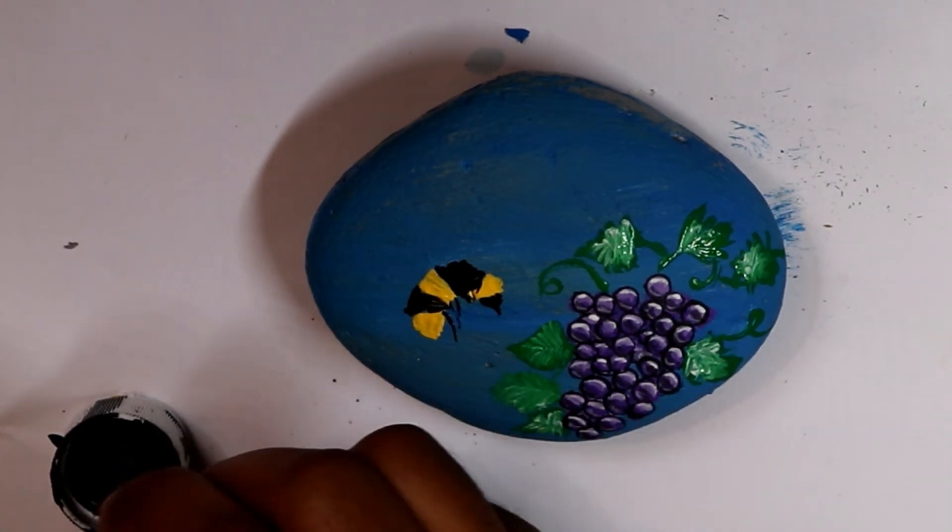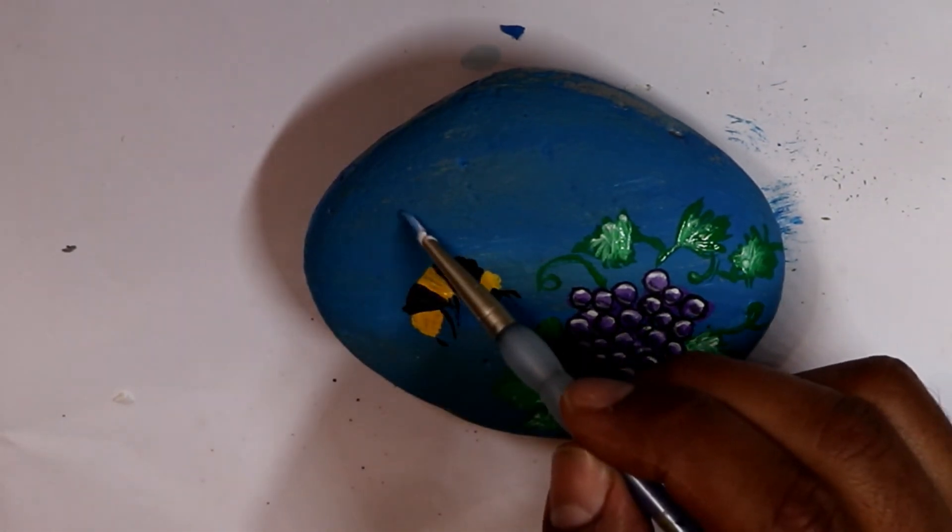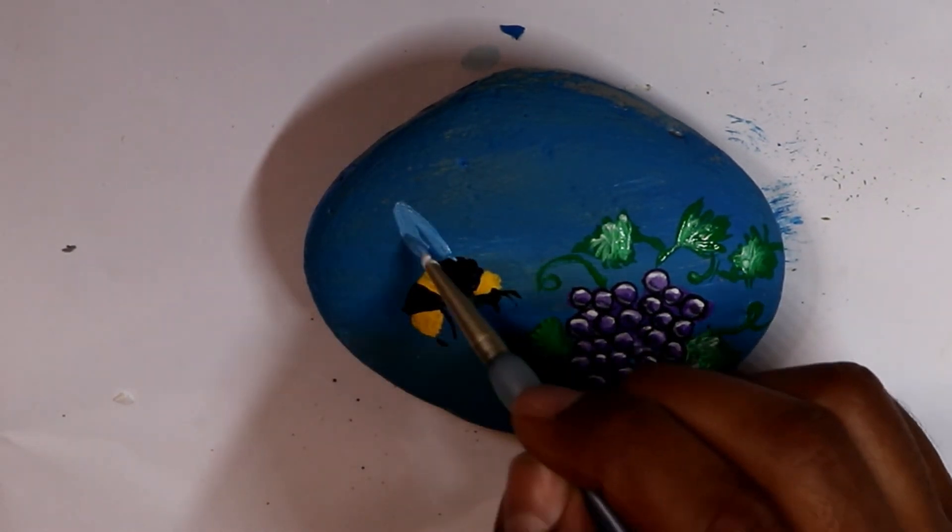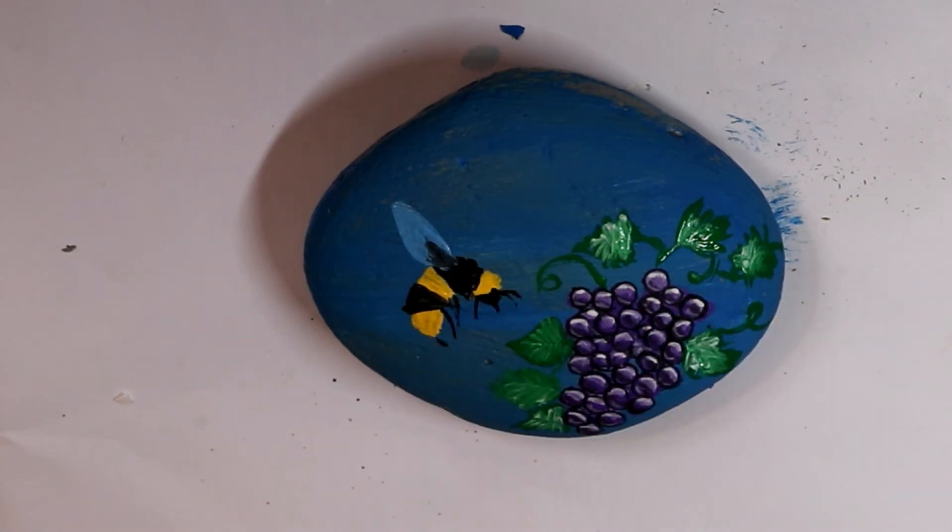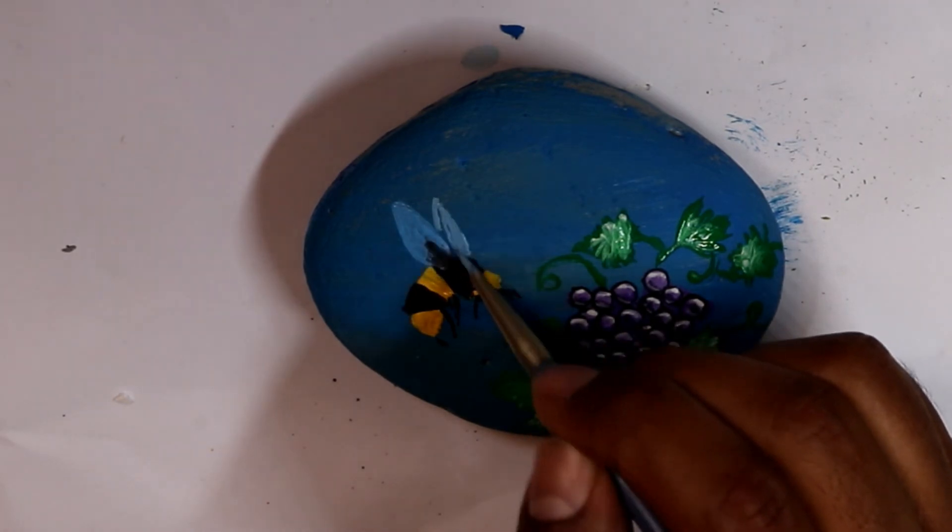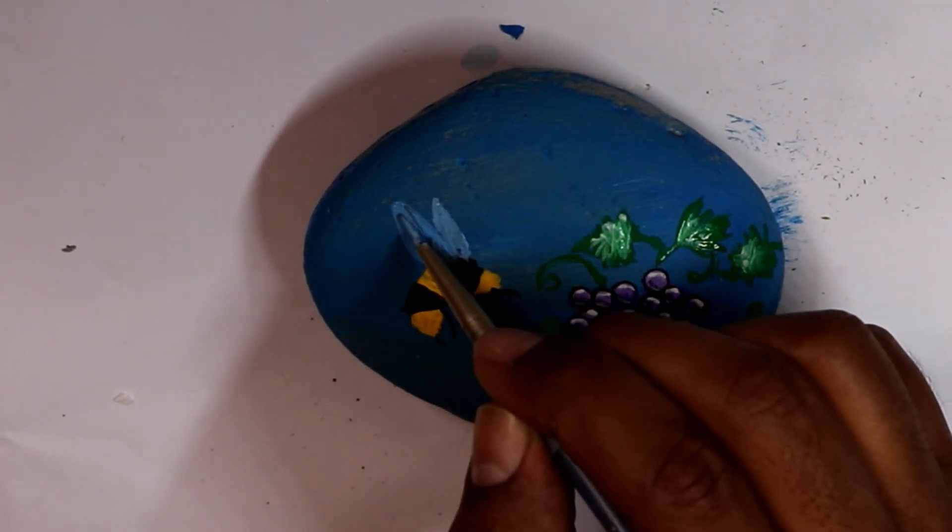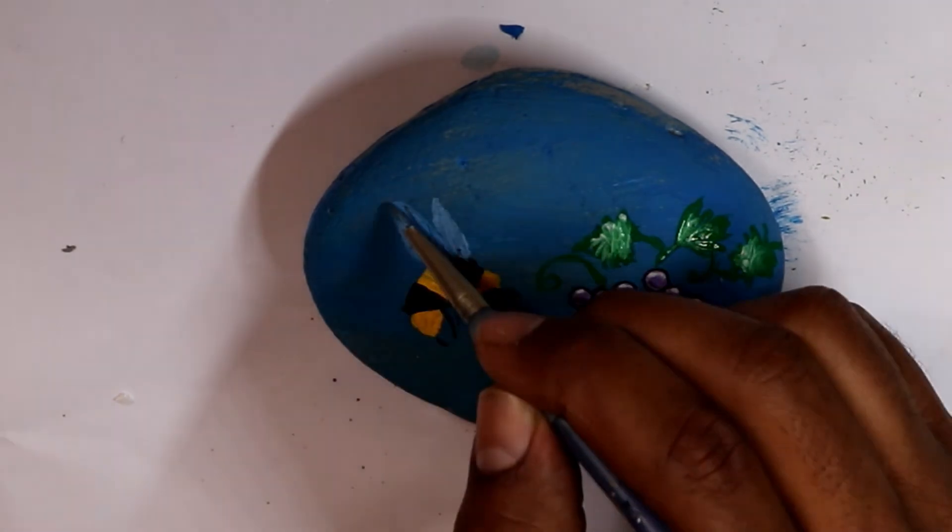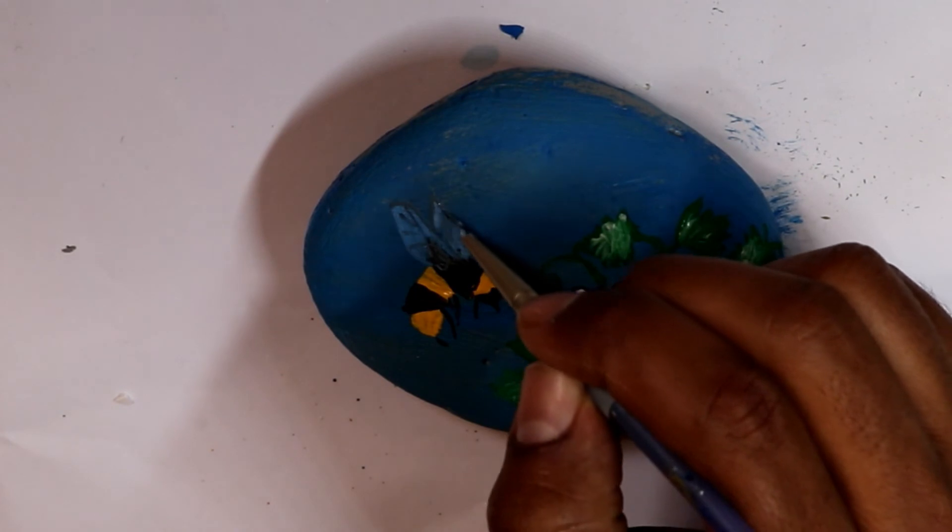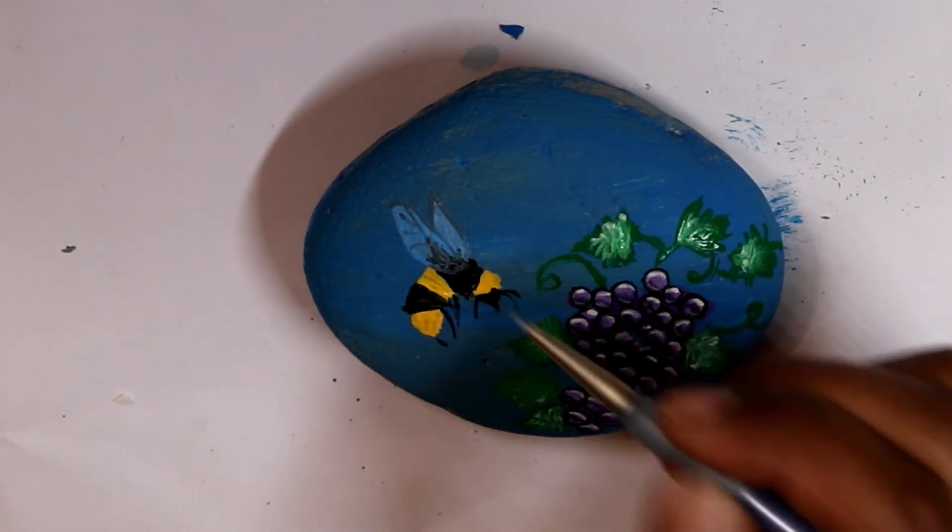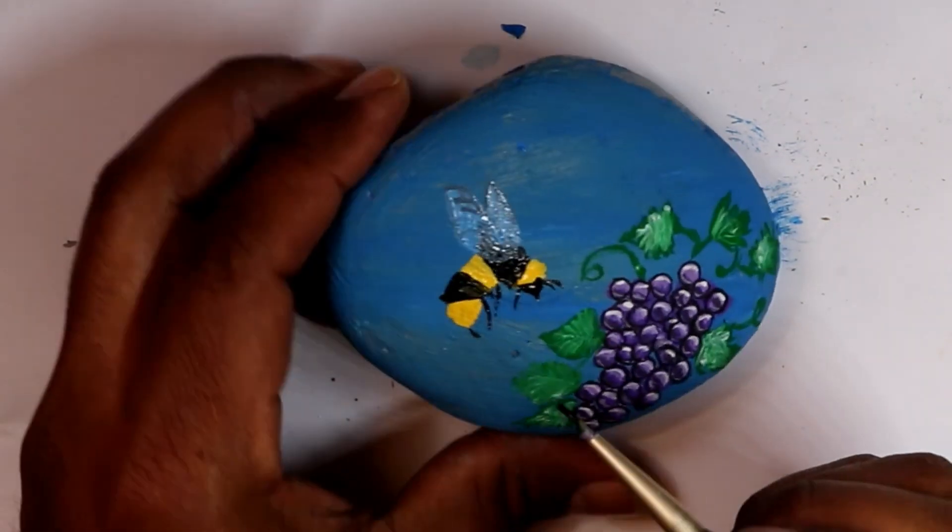I painted the bee with yellow and black acrylic paint, very basic. For the wings, I used light blue, and where the wings attach, I made it a little darker. Then the little veins—I don't know what you call what goes on the wings—and then I painted some antennae on the bee.